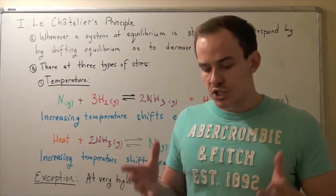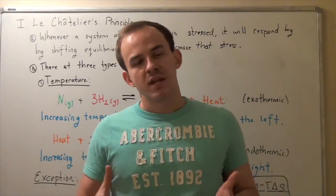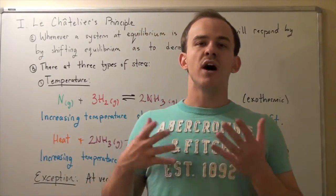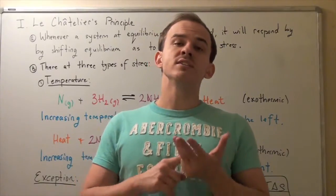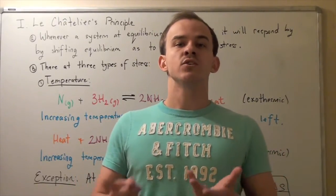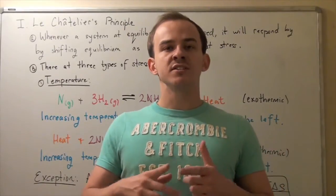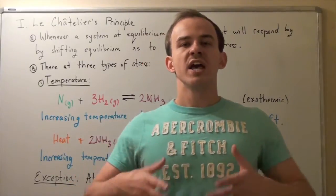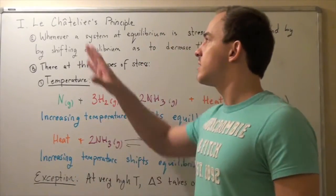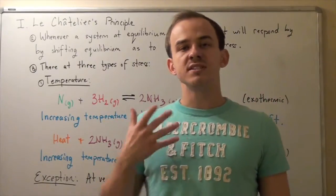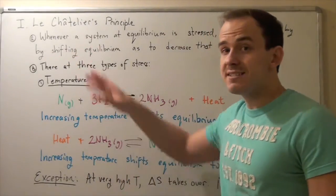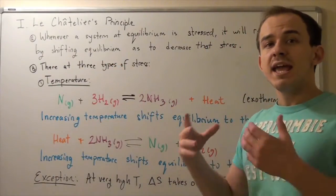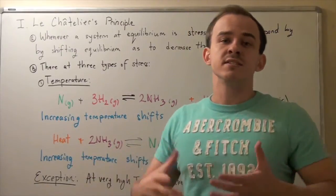Suppose we have a chemical reaction that has achieved equilibrium. How does our chemical equilibrium change when we change the following things: when we increase or decrease temperature, when we increase or decrease pressure, or when we change the concentrations of reactants or products? These questions and many others can be answered using Le Chatelier's principle, which states that whenever a system at equilibrium is stressed, it will respond by shifting equilibrium in the direction that tends to decrease that stress.